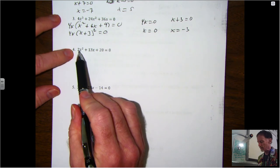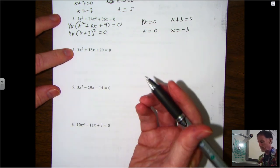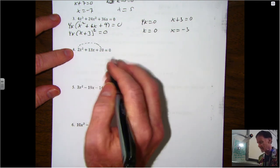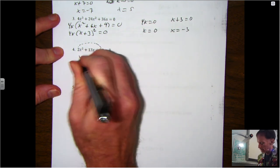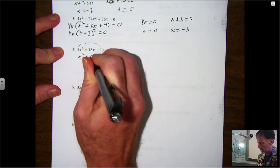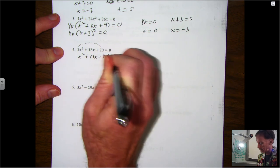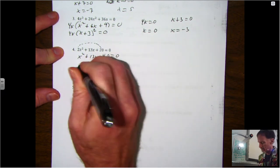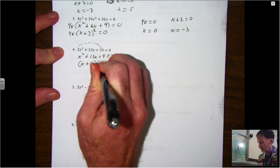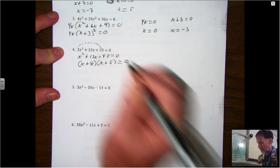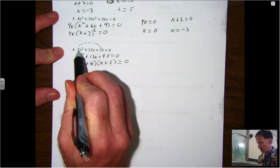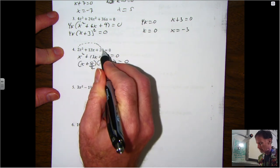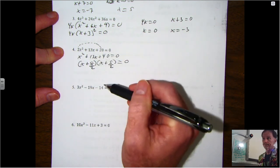So whenever you have an a value that's not 1, the easiest way to go about doing this is some people call this the AC method because you literally multiply the a times the c. So just rewrite it, so it'd be x squared plus 13x plus 40, and then you factor it just like normal. So what multiplies to 40 and adds to 13? That would be 8 and 5.